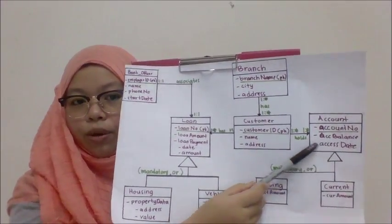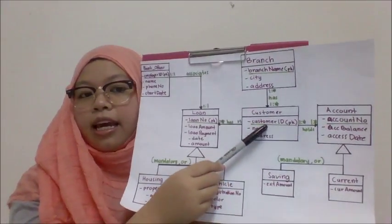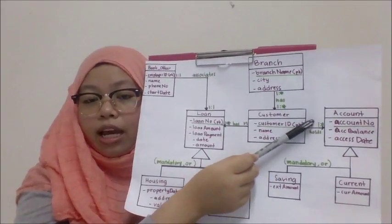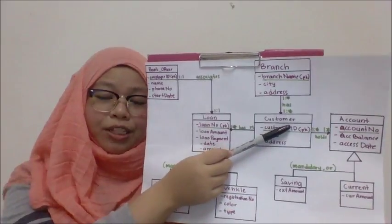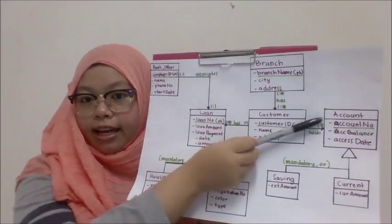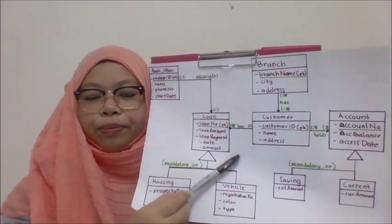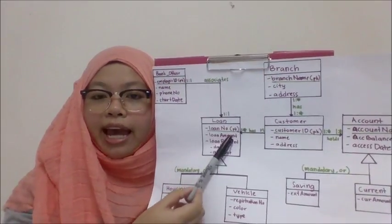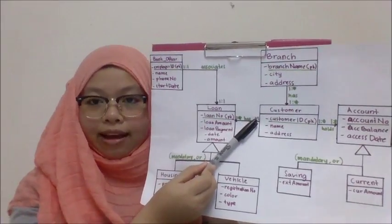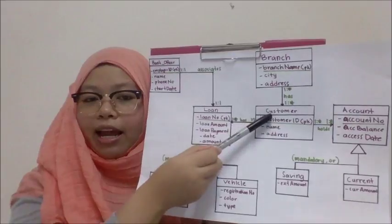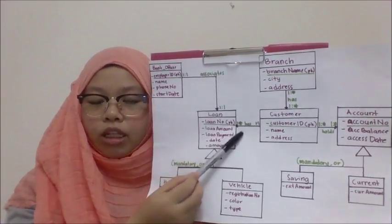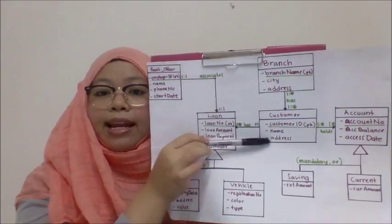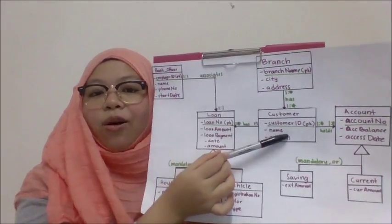The relationship between the customer entity and the account entity: a customer can have one or many accounts, and an account can be held by one or many customers. So the relationship is many-to-many. For the relationship between customer and loan: a loan can only be held by one customer, while a customer can hold one or many loans. So that relationship is one-to-many.